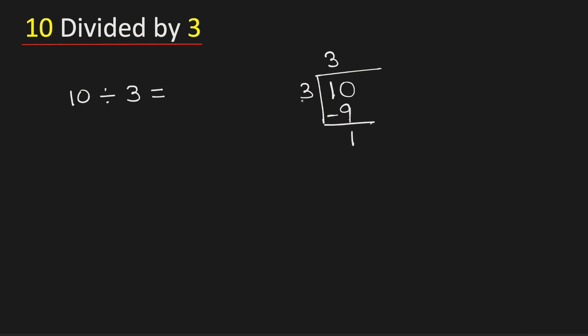Now see that 1 is less than 3. That is why we need to put a decimal here so that we can borrow one zero.